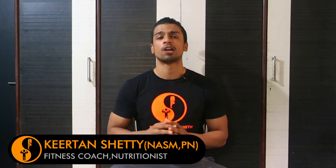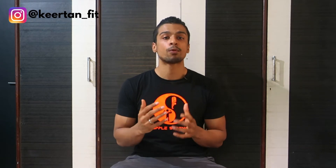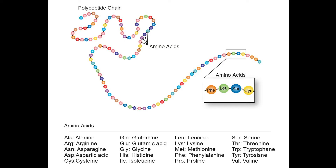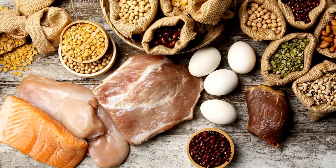Today's video is part two of our protein series, where we're going to look at the metabolism of protein in our body — how the body utilizes protein. As we talked about in the last video, protein is nothing but a chain of amino acids. When we talk about protein, we have to give more importance to the amino acids and not just the protein itself.